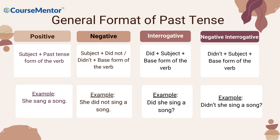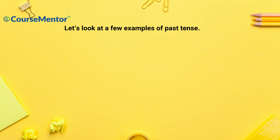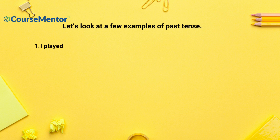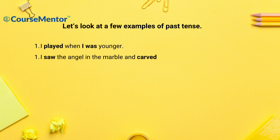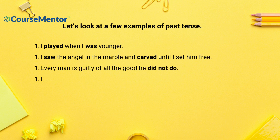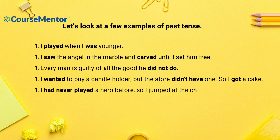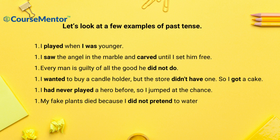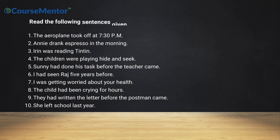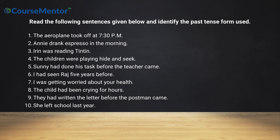Let's look at a few examples of past tense: 'I played when I was younger.' 'I saw the angel in the marble and carved until I set him free.' 'Every man is guilty of all the good he did not do.' 'I wanted to buy a candle holder but the store didn't have one, so I got a cake.' 'I had never played a hero before, so I jumped at the chance.' 'My fake plants died because I did not pretend to water them.'